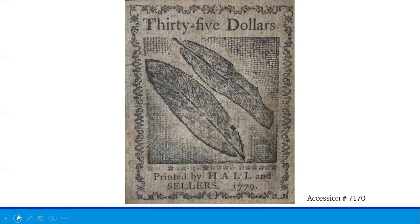Despite the fact that the amount of counterfeit currency in circulation may have actually exceeded the amount of legitimate currency in circulation at one point, the economy never fully collapsed. Another sign of the extent of British counterfeiting was that the issues of legitimate continentals issued between May 20, 1777 and April 11, 1778 — about a year's worth of printing — became so widely counterfeited that Congress eventually decided it was easier and necessary to recall all issues in their entirety.